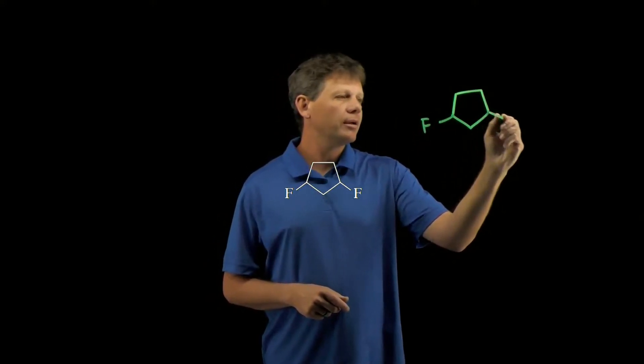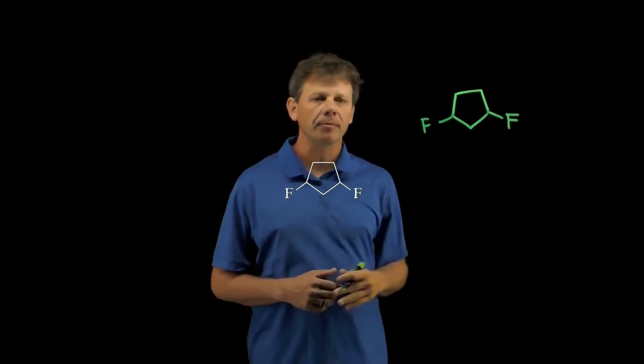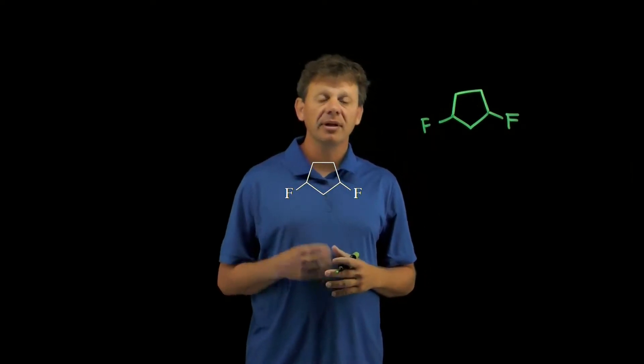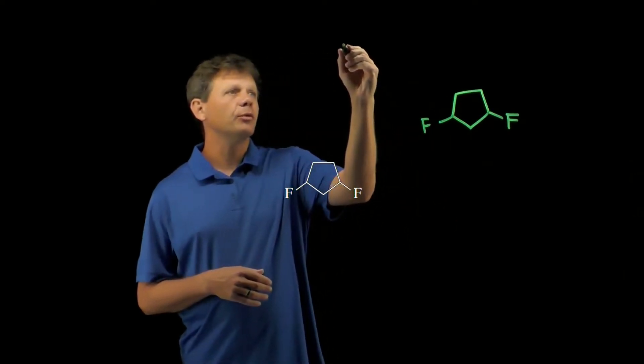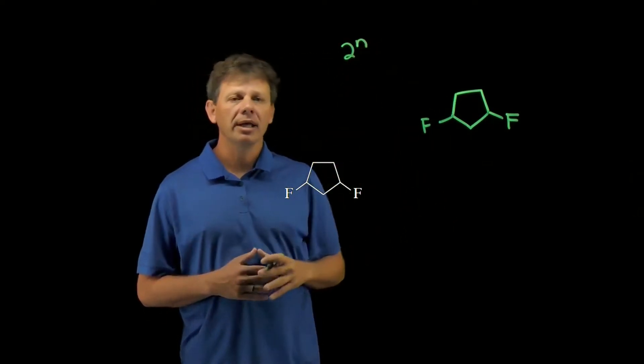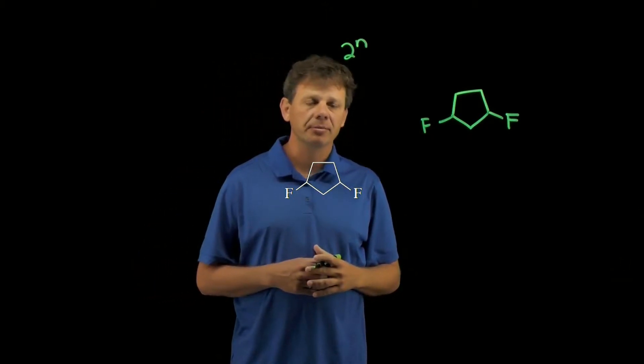To determine the number of stereoisomers possible, we want to know how many stereocenters there are, because for n stereocenters we end up with 2 to the n stereoisomers.